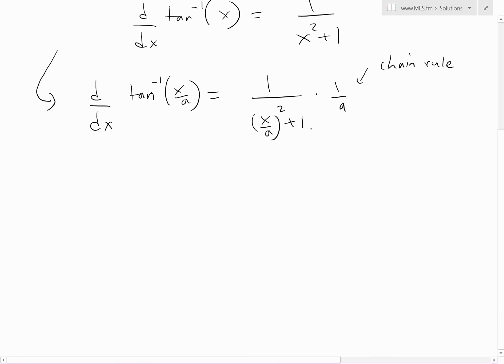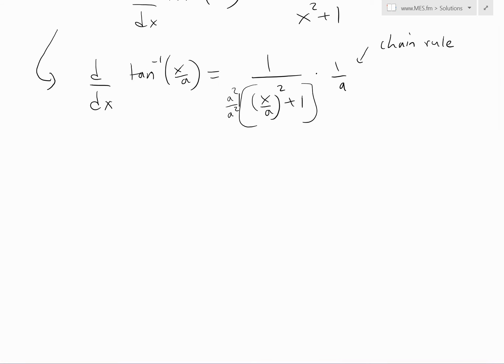Now what we could do is cancel this a at the bottom. We times it by a squared on the top and bottom of the denominator here just to cancel it out. We're not changing anything. What we get now is 1 over, and then I'll move this a squared to this side.